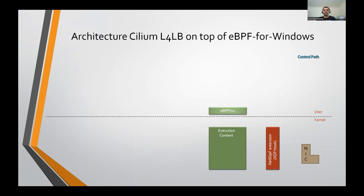This slide shows the architecture for Cilium L4LB using eBPF for Windows. To start with, the eBPF for Windows framework is already installed on the LB node. An eBPF service execution context and the net eBPF extension, which implements the XDP hook, are already running on the system. When a Cilium agent is initialized, a mode is provided to it as input — SNAT or DSR — as the XDP program needs to be compiled for a specific mode.